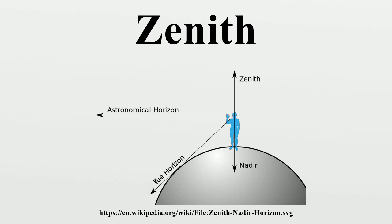Relevance and use: the term zenith is sometimes used to refer to the highest point, way, or level reached by a celestial body during its apparent orbit around a given point of observation. This sense of the word is often used to describe the location of the sun.